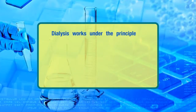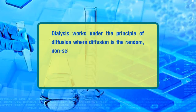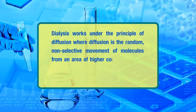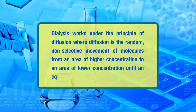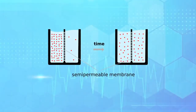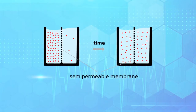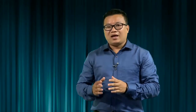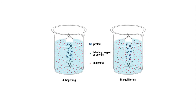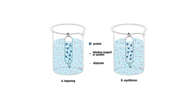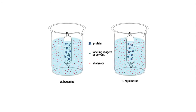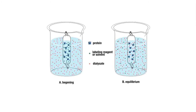In practice, dialysis works under the principle of diffusion, where diffusion is the random, non-selective movement of molecules from an area of higher concentration to an area of lower concentration until an equilibrium is reached. Here, differential diffusion can be attained by use of a semi-permeable membrane between the two concentrations, that is, the sample and the dialysis buffer. In dialysis, use of a certain pore size of dialysis membrane limits the inflow and outflow of large molecules and facilitates movement of small molecules that can pass through the membrane pore. Hence, samples of large molecules containing contaminants of small molecules when dialyzed will contain the larger molecule inside the bag, and small-sized contaminants will pass through the membrane.